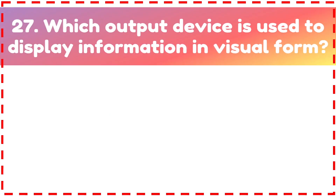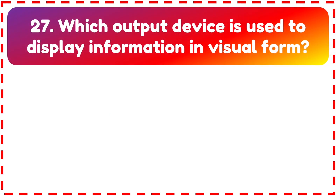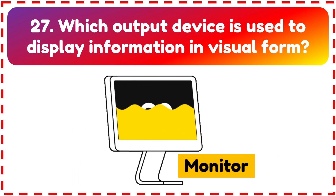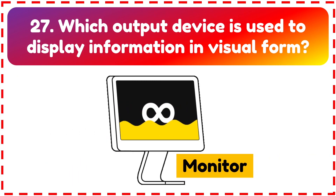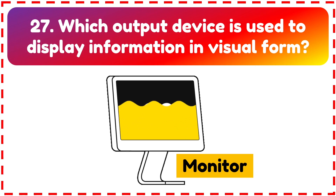Which computer device is used to display information in visual form? Computer monitor is used to display information in visual form.